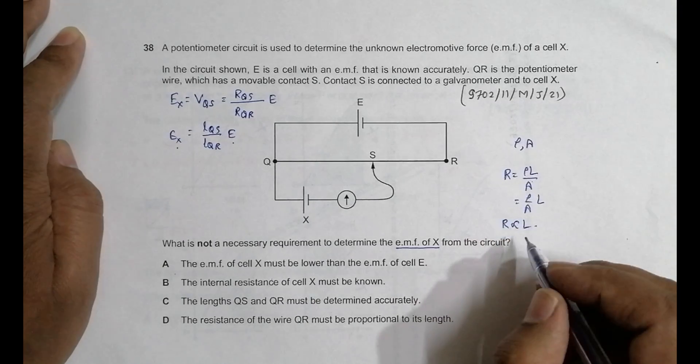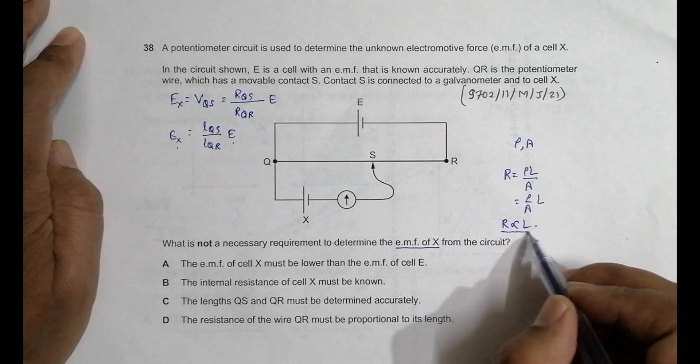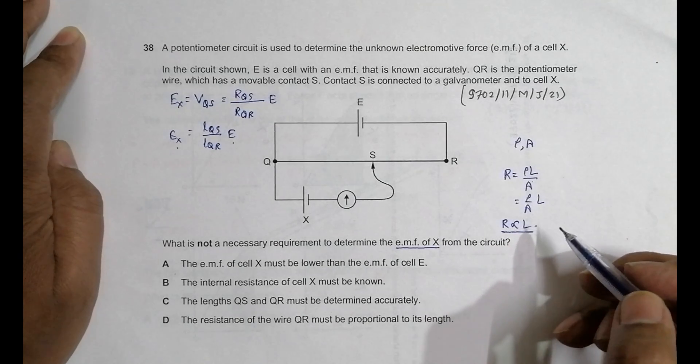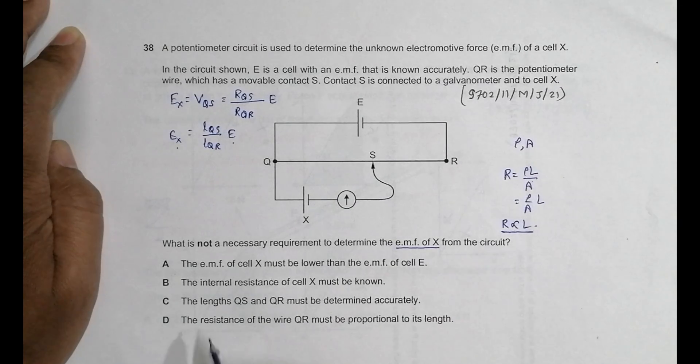So R is proportional to L. So R of this thing should be proportional to the length. That's the only depending factor here. No change in cross section anywhere.